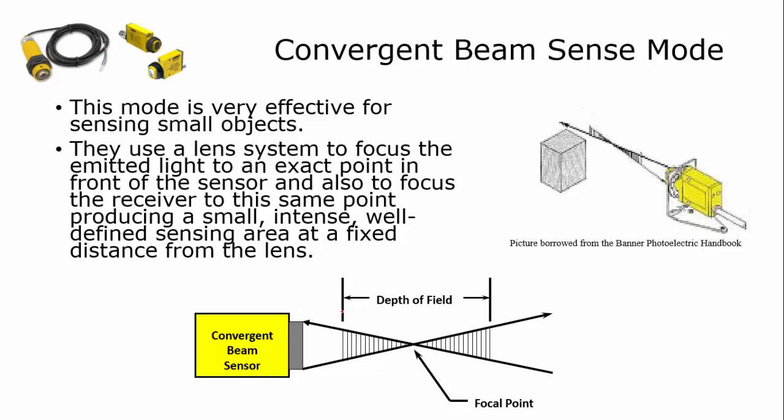You can see that this particular sensor has a focal point which is right here. The light coming out of the emitter is focused at this point. This is also where the maximum amount of light will be returned to receiver. When I have an object that I'm sensing at this point, I'll get the maximum amount of light back.